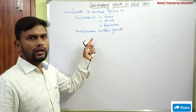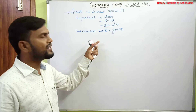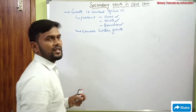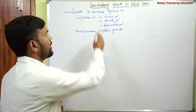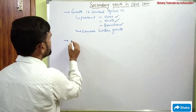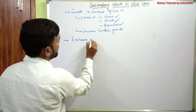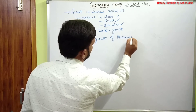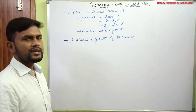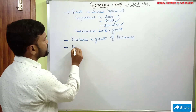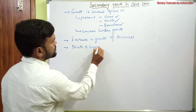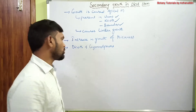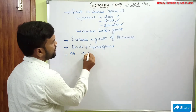Apart from linear growth, there is a corresponding increase in the thickness of the plant body — the increase in thickness of stems, roots, and branches. This increase in thickness is called secondary growth. Secondary growth is observed in dicots and gymnosperms.